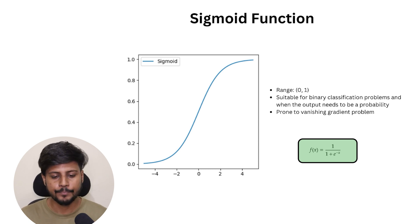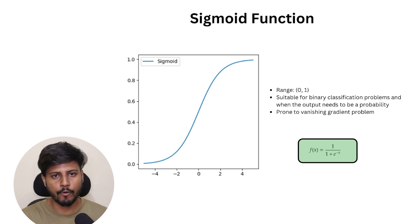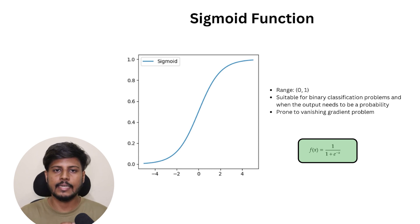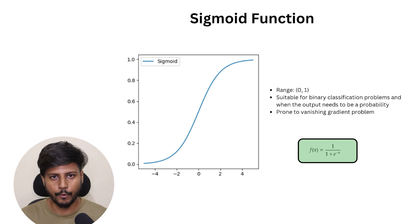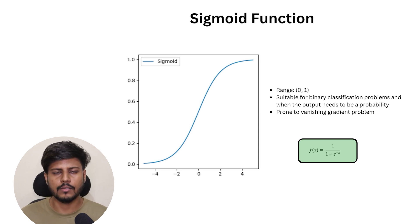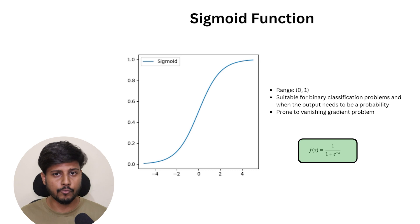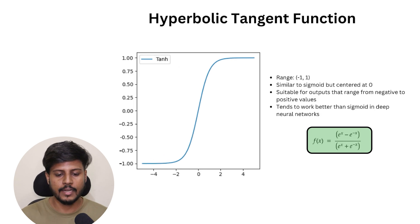The disadvantage of the sigmoid activation function is that it has the vanishing gradient problem. In order to tackle that, we have other types of activation functions which we can use.